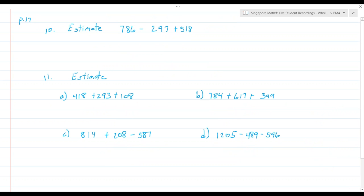Continuing on page 17, now we're going to do the same thing with three numbers instead of two. By now, when you look at these, can you look at it and see that this would round to 800 minus 300 plus 500? I think it's always good with math to stop and think. If I do 800 minus 300, I have 500. And then if I add 500, I get 1000.